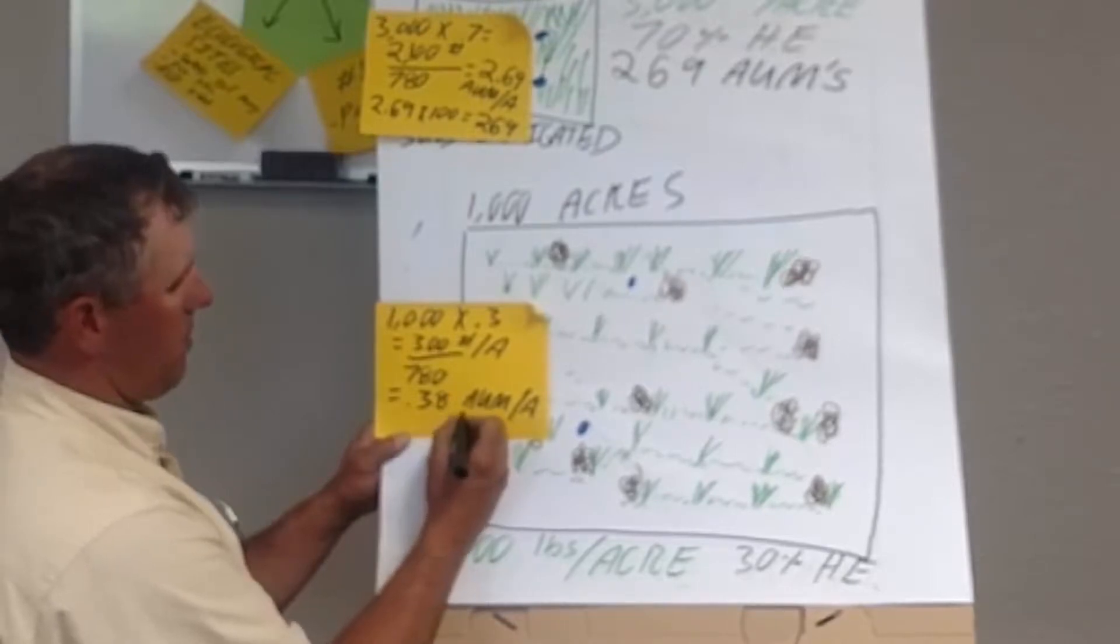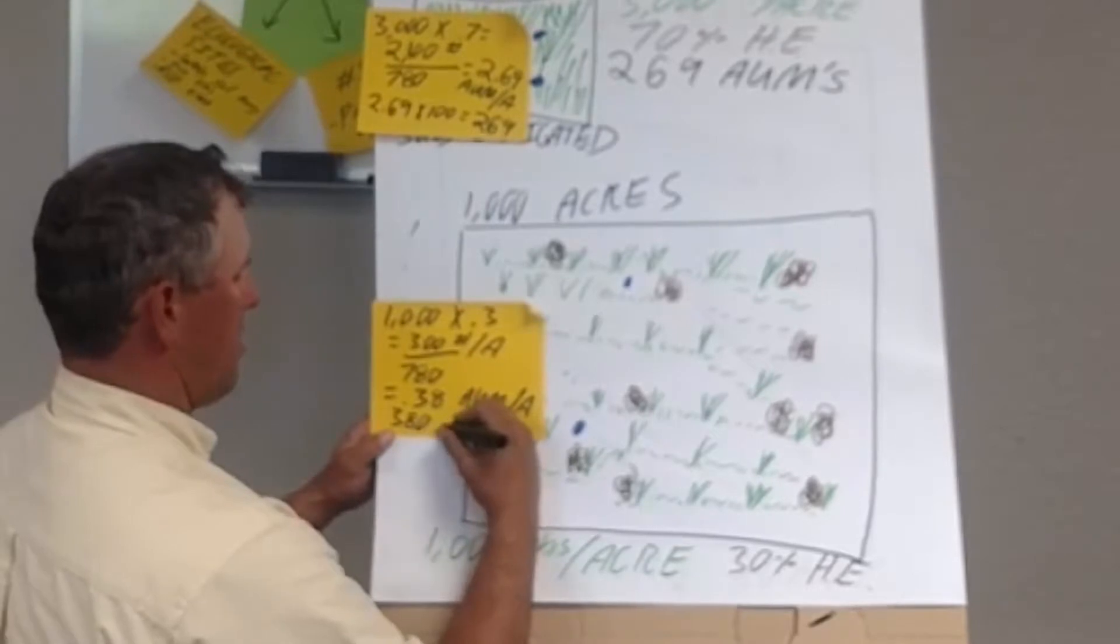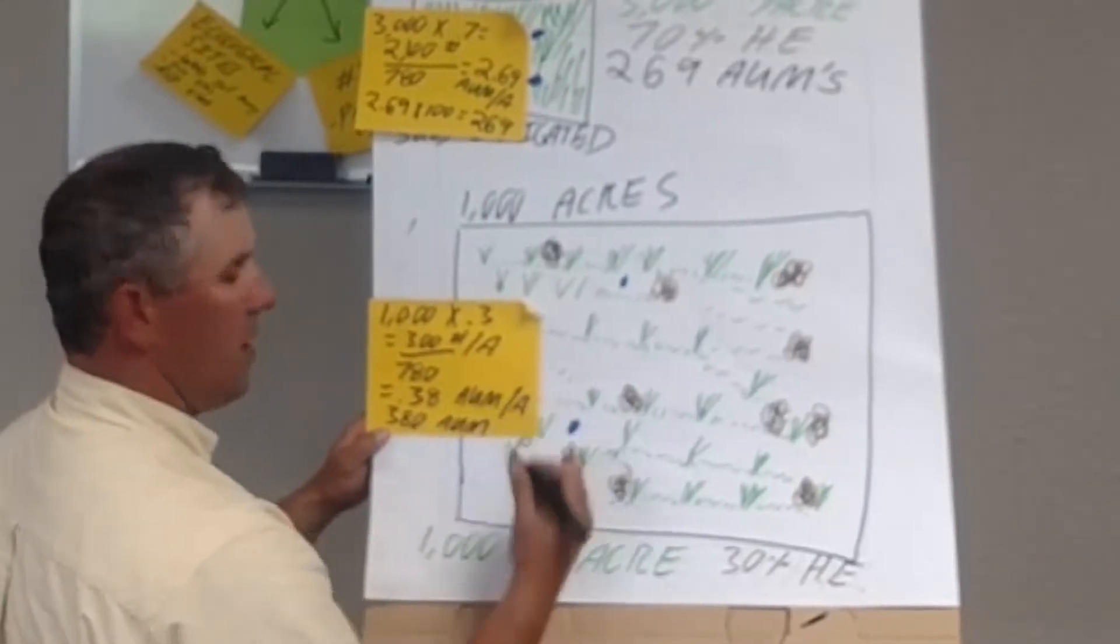Move the decimal place three points. One, two, three. That's going to give me 380 total AUMs from this pasture.